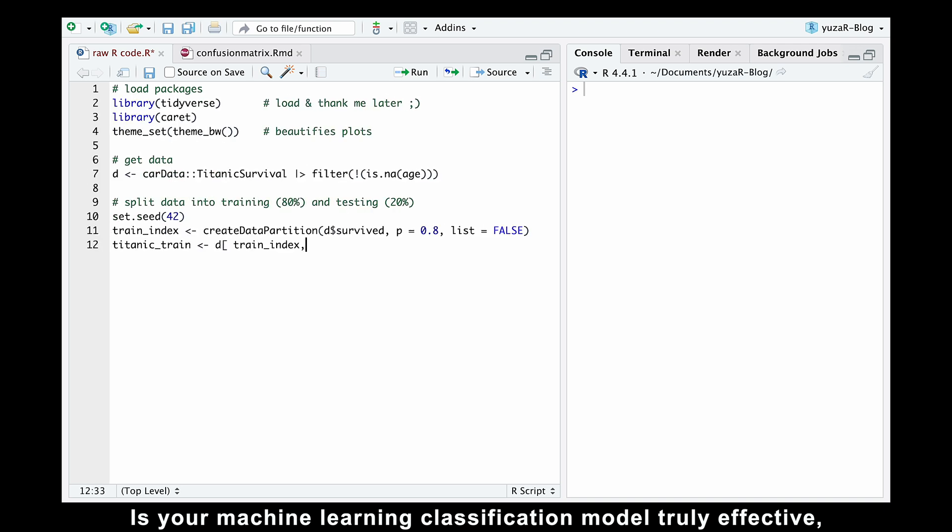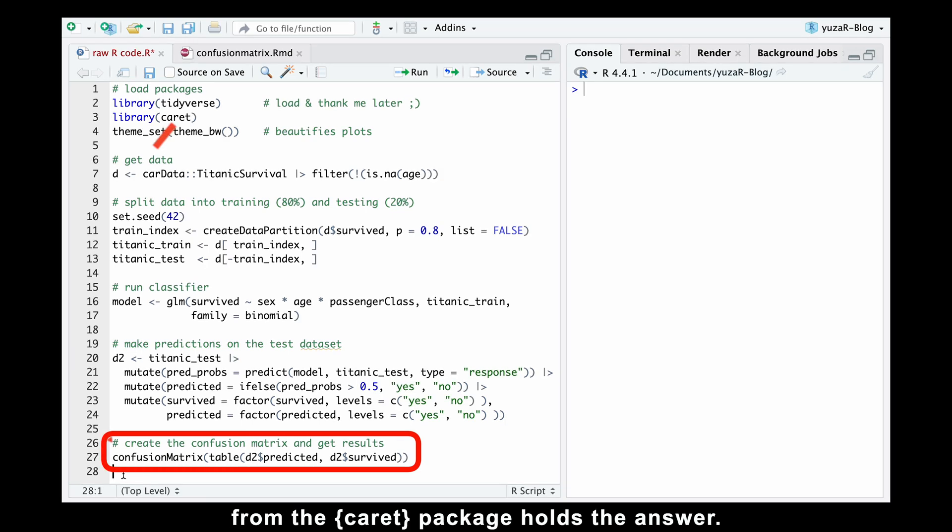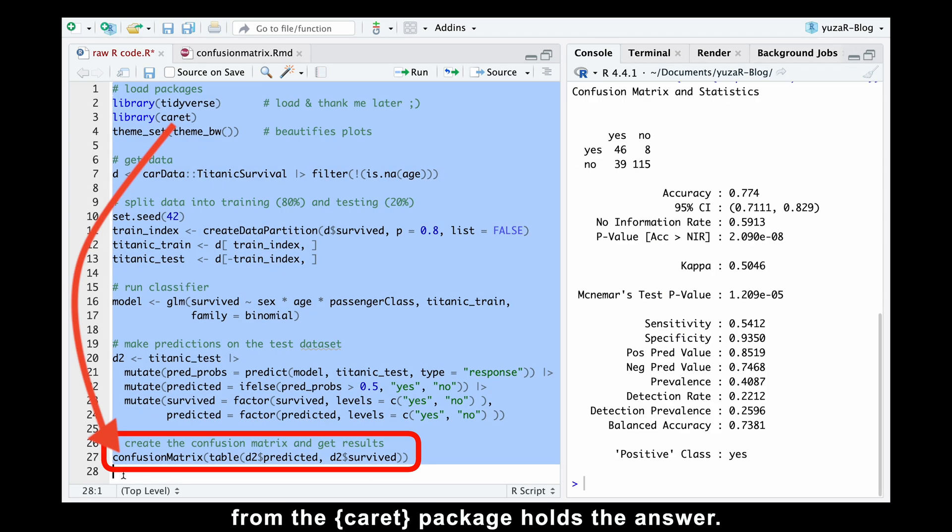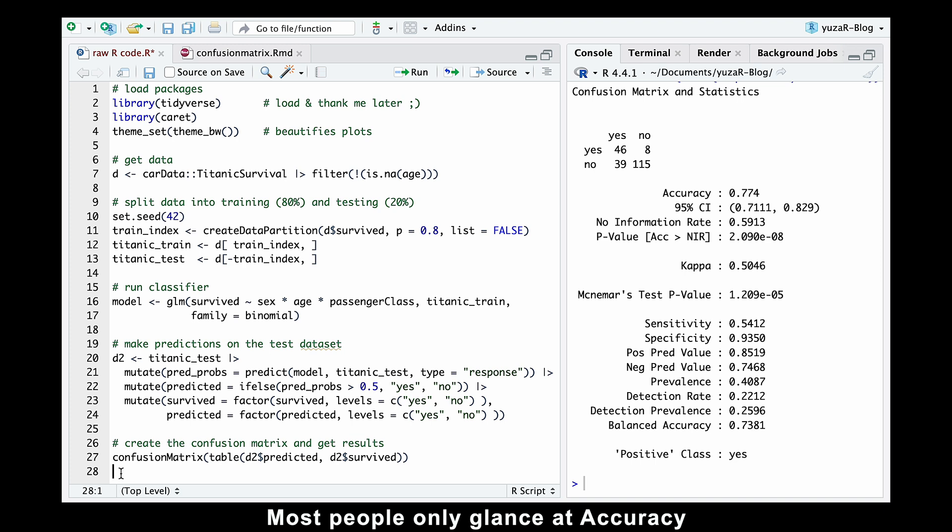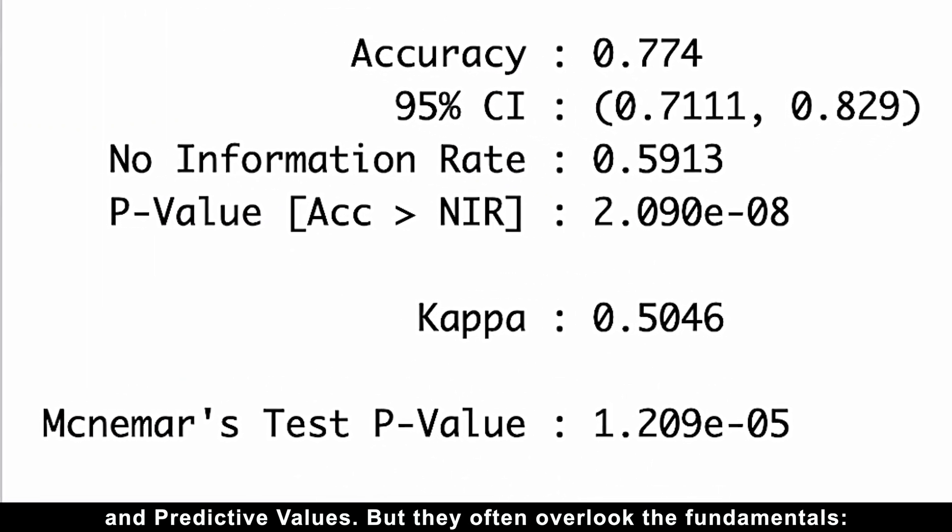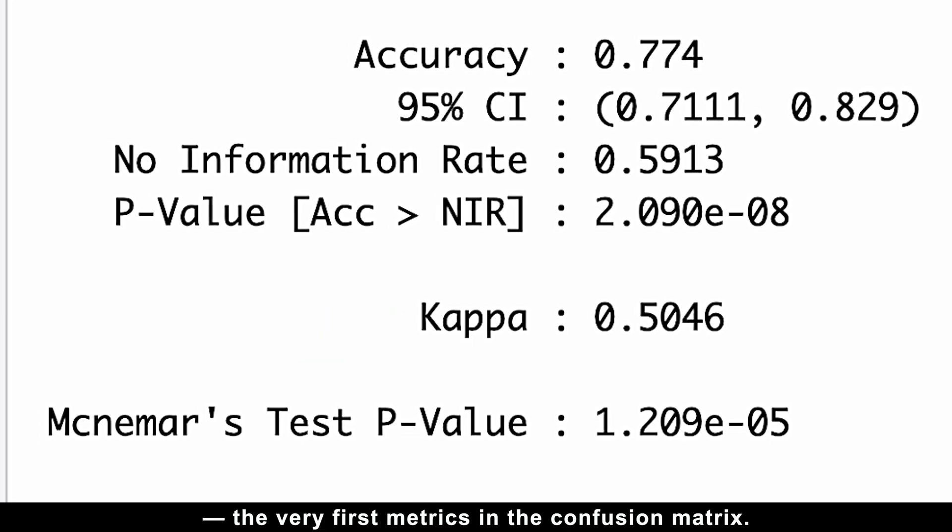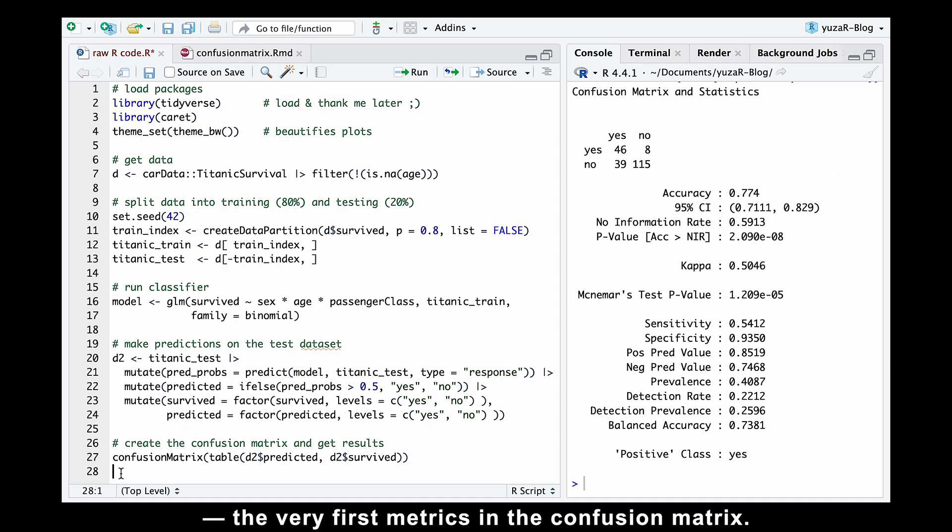Is your machine learning classification model truly effective or just a lucky guess? The confusion matrix function from the caret package holds the answer. Most people only glance at accuracy and then jump straight to sensitivity, specificity, and predictive values. But they often overlook the fundamentals: no information rate, kappa, and p-values, the very first metrics in the confusion matrix.